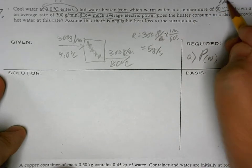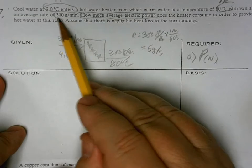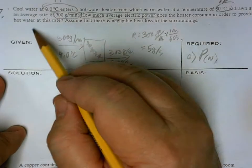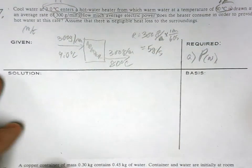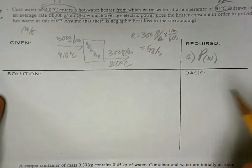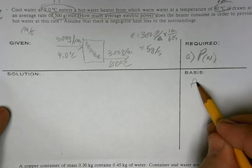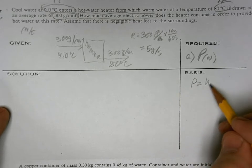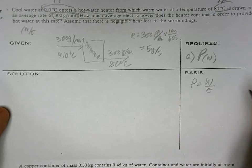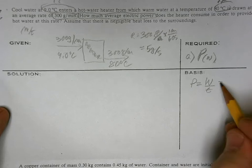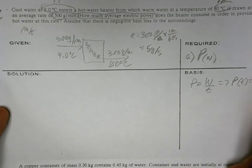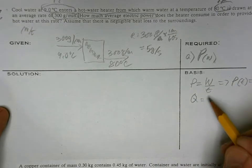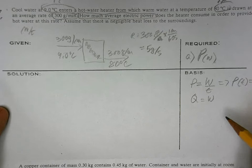I think we got all the given. So what is our basis? Again, power is equal to work over time, which means power times time is equal to work. Q is equal to work, first law of thermodynamics.